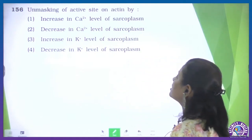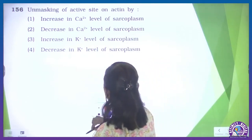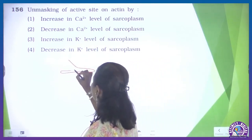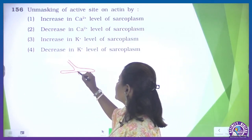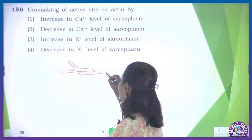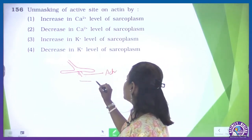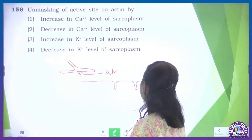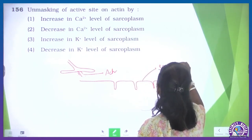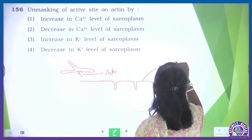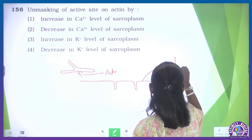Question number 156: unmasking of the active site on actin is by? When an impulse arrives at the motor end plate, a neurotransmitter is released from there. We know this neurotransmitter is acetylcholine. And who receives the acetylcholine? That is the sarcolemma — the plasma membrane of the muscle cell, known as the sarcolemma.